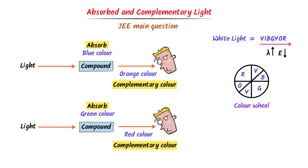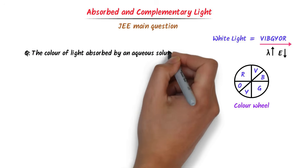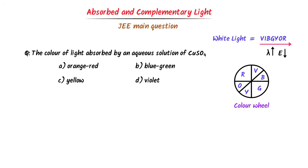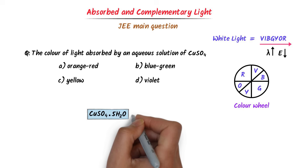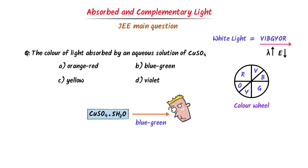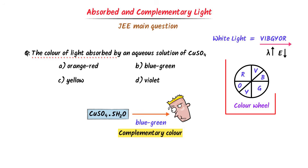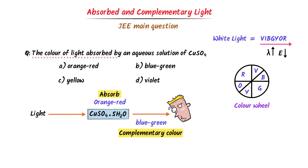Using this concept, we crack one important JEE Main question. The question: the color of light absorbed by an aqueous solution of copper sulfate is ___. We know that aqueous solution of copper sulfate is CuSO4·5H2O and its color is blue-green. Since blue-green is the complementary color, and on the color wheel the opposite of blue-green is orange-red, aqueous solution of copper sulfate absorbs orange-red color and radiates blue-green. Hence the correct option is A.